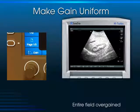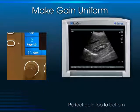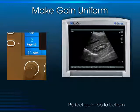How do we adjust the gain? On the Sonosite S device, there's a rotary knob. You turn it counterclockwise, and we take this severely over-gained image down to a nice level of gain where I can easily see that the cortex of this kidney is less echogenic than the liver parenchyma.